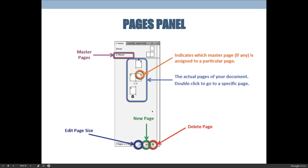When you're ready to start working in InDesign, there are three buttons at the bottom right-hand corner of the Pages panel to memorize. Starting from the right: there's a trash can, which is the delete option. If you select a page you don't want, you can hit the trash can to delete it. You can also drag and drop the page onto the trash can, but simply clicking the page and then clicking the trash can works too.